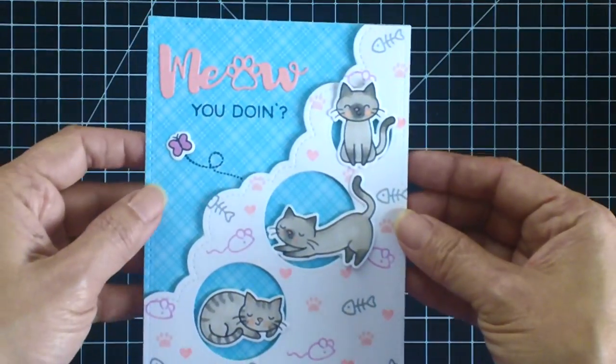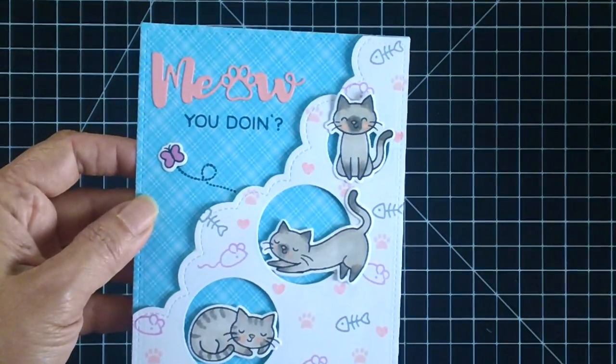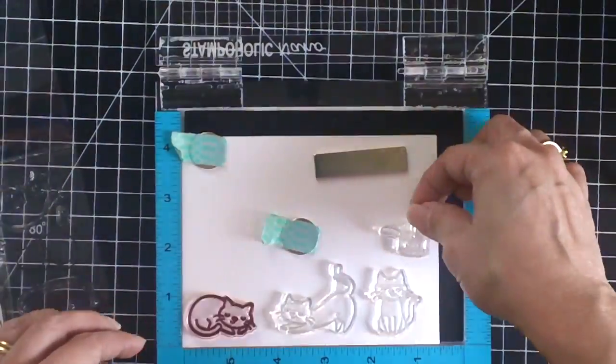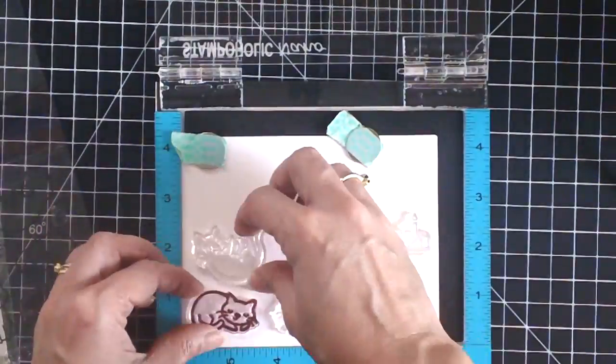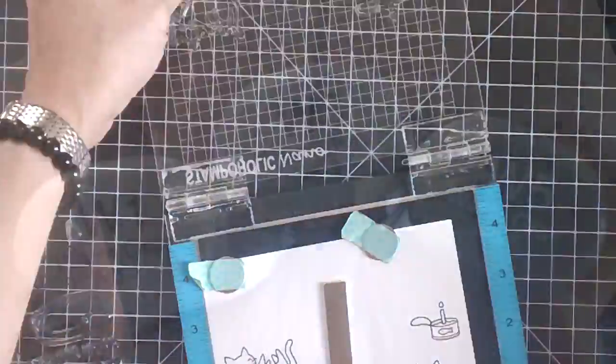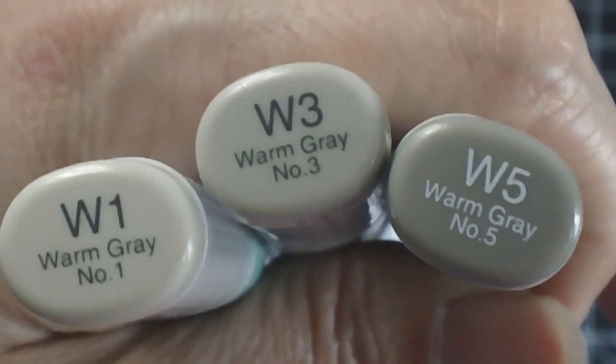And then this is the card that I am going to show you today. So if you guys would like to see the process video then please keep watching. I started out by stamping my images on Neenah solar white cardstock using my stamping tool and I'm using memento tuxedo black ink to stamp them.